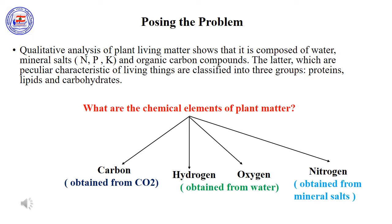Qualitative analysis of plant living matter shows that it is composed of water, mineral salts — nitrogen, phosphorus, potassium — and organic carbon compounds. The latter, which are peculiar characteristics of living things, are classified into three major groups: proteins, lipids, and carbohydrates.